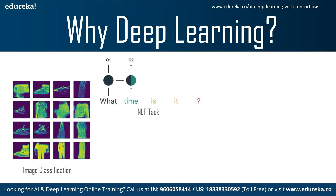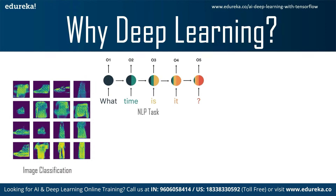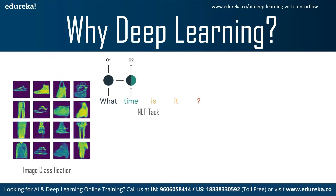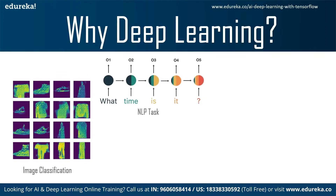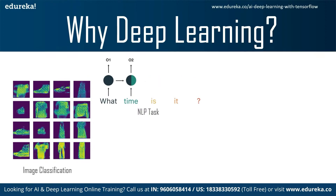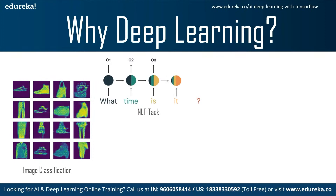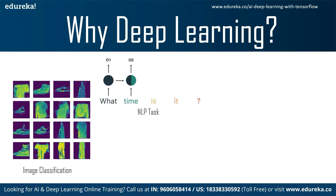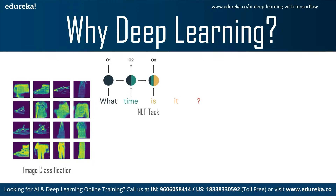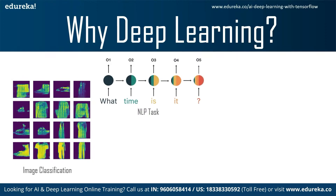The next type of application using deep learning involves sequential data — things like time series data or natural language. We call it sequential data because the previous word or feature is dependent upon the next feature. For example, 'what time is it' — each word is a feature, and you need to know what came before to understand the meaning. To handle this, we use Recurrent Neural Networks, or RNNs, and there are various versions of RNN to overcome its disadvantages.